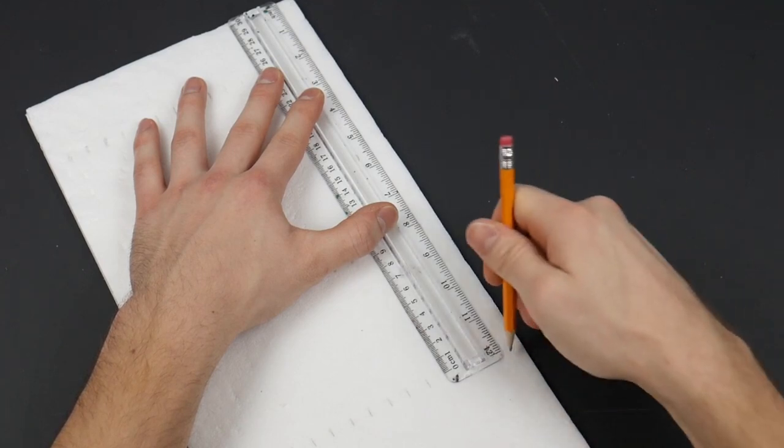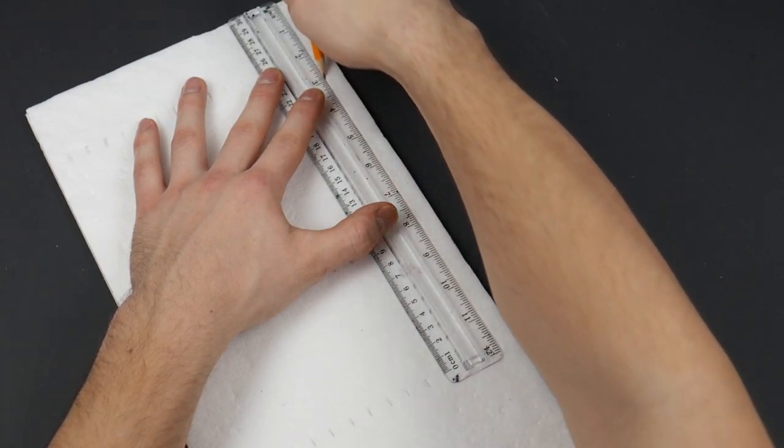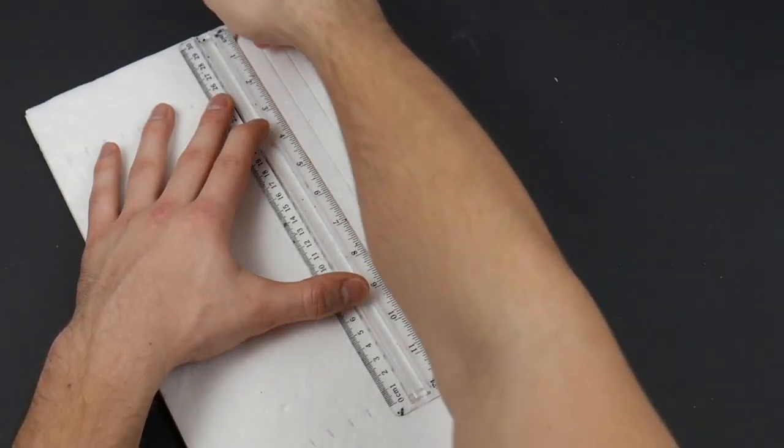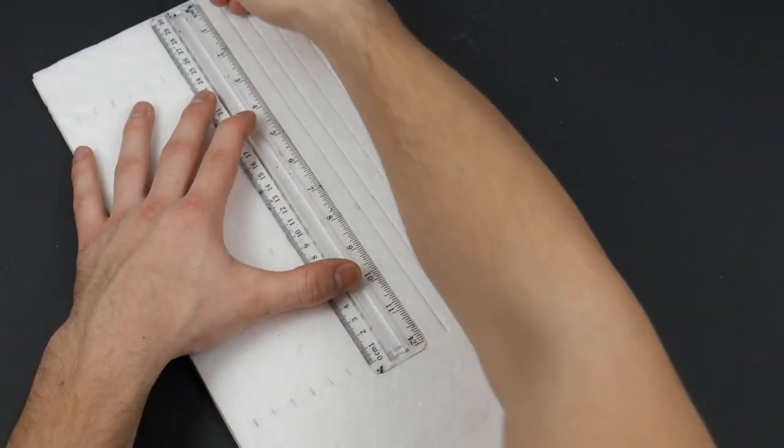Now I'm just drawing them out. I'm basically just putting my ruler on one side of the lines and continuously scoring it about two to three times to really get a nice deep imprint.